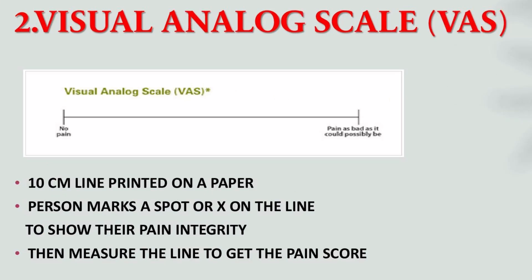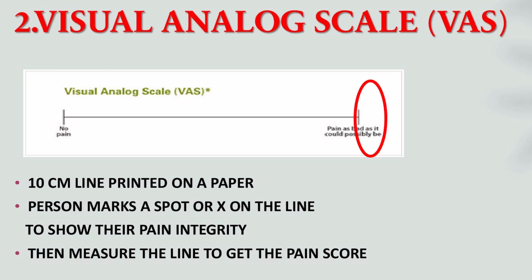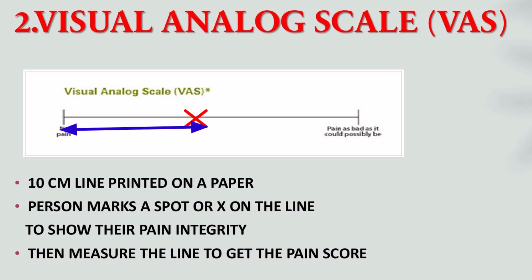A score of 10 means the worst possible pain. The next scale is the visual analog scale. This shows a 10 cm line printed on paper with anchors at either end — one end represents no pain and the other represents the worst possible pain. The person marks a spot or X on the line to show their pain intensity, and we measure the line to determine the pain score.